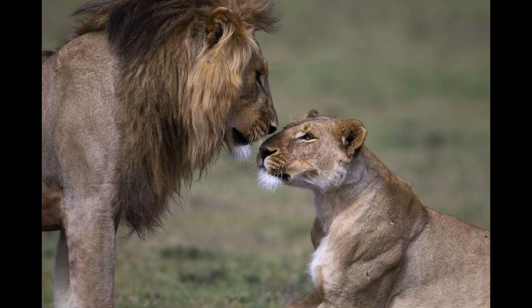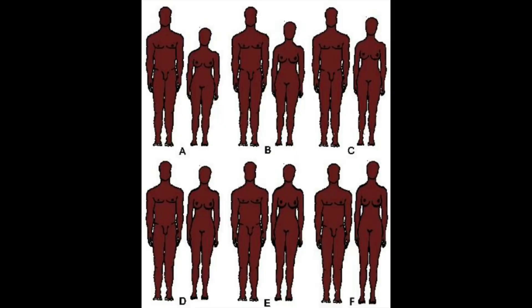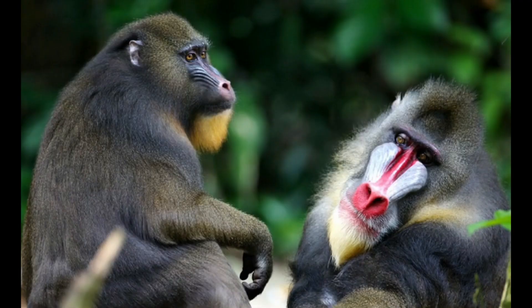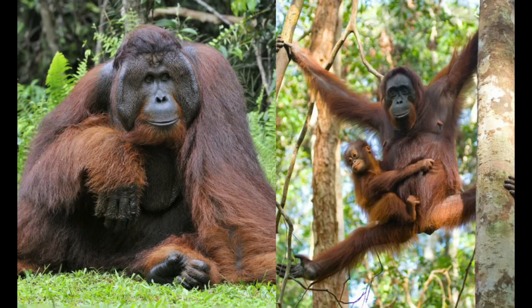Male lions have a mane while females don't. Male deer have antlers while females don't. All female mammals have larger breasts. Male mandrills have a colorful face while females don't really have that much color on their faces. Male elephant seals are larger and have a large proboscis. Male orangutans have a cheek pouch while females do not. I also made an orangutan video — you should really check that out.